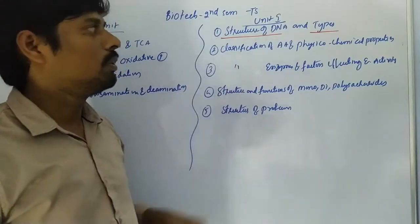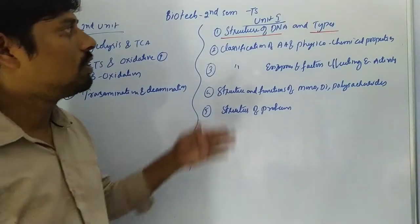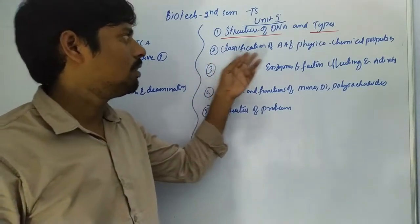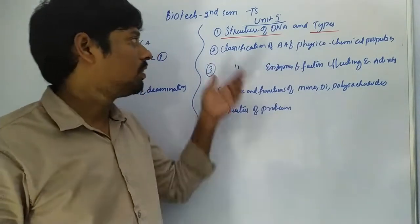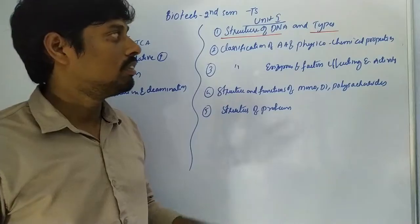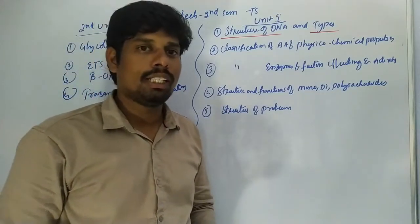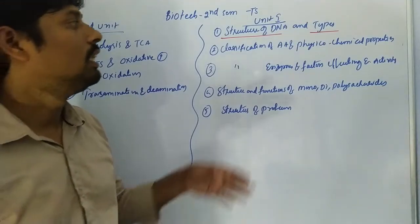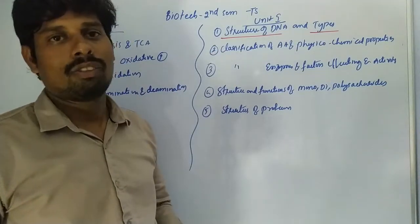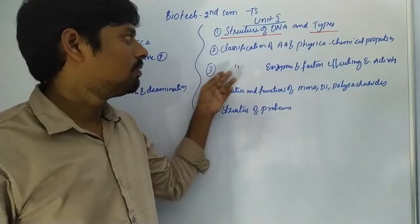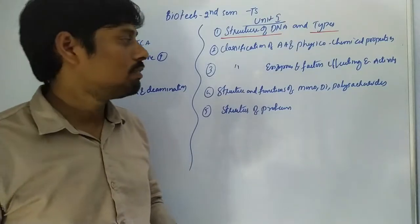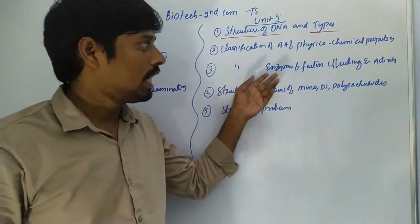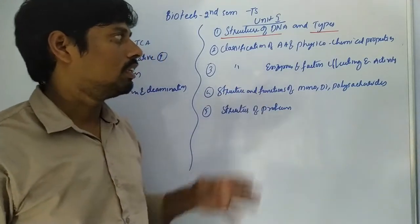The first important question is a short answer. The second important is classification of amino acids — very, very important. The classification of amino acids covers physical and chemical properties. The third important is classification of enzymes — six classes of enzymes.